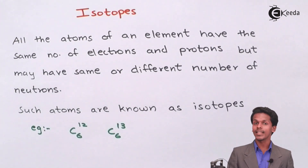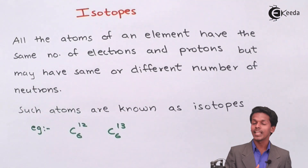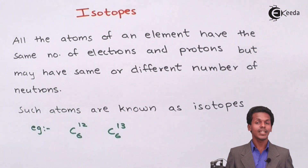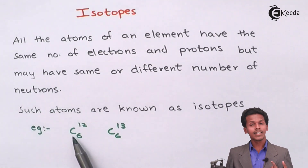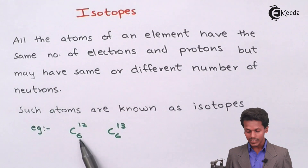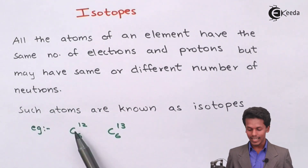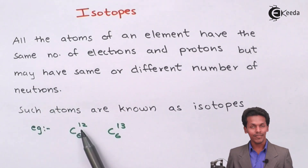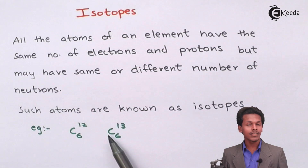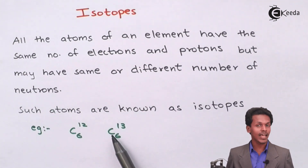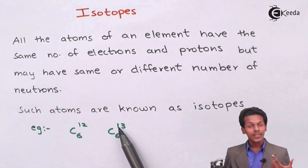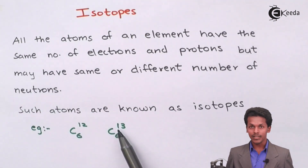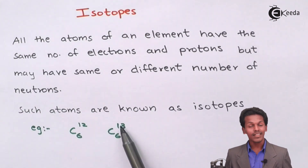Let me give you a short idea of how to determine whether an atom is an isotope or not. I have given an example using carbon, which has an atomic number of 6 and an atomic mass number of 12. Another form of carbon also has an atomic number of 6 but an atomic mass number of 13.